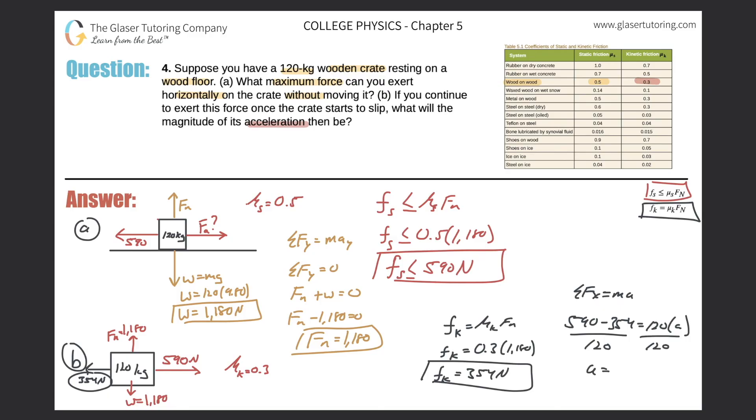Notice it's going to work out to be positive, which it should, because I'm assuming it's moving to the right. Minus 354, all divided by 120. So it looks like we get a value of 1.97. So 1.97 meters per second squared. That would be the acceleration now of this block if we apply the same force of 590 newtons while the block is in motion.